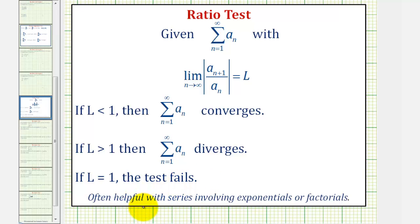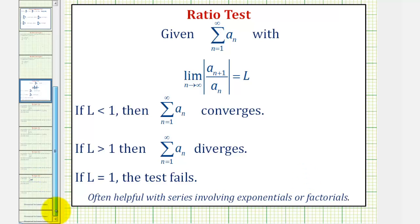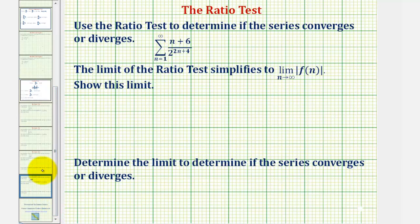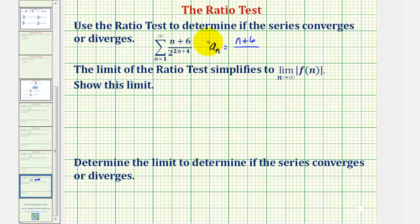The ratio test is often helpful when the series involves exponentials or factorials. Going back to our example, notice that a_n would be equal to the quantity (n + 6) divided by two, raised to the power of (2n + 4).